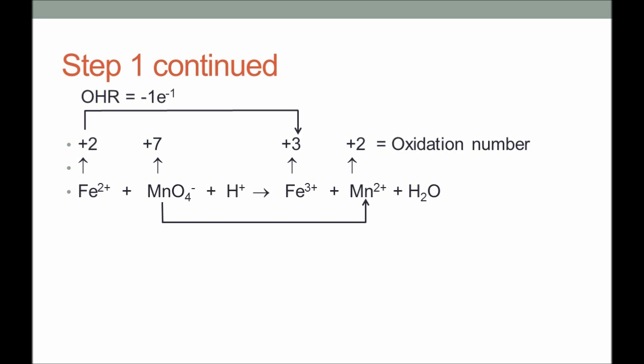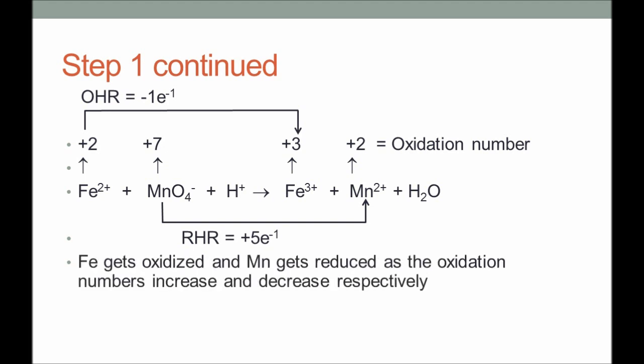Manganese in manganate ion changes into Mn²⁺. The oxidation number decreases by 5 units, which means it needs to gain electrons — it is a reduction half-reaction, and we have to provide 5 electrons for it. So we have identified the oxidation half-reaction and reduction half-reaction in this reaction.